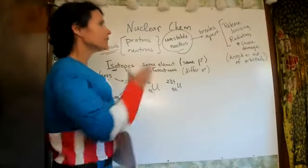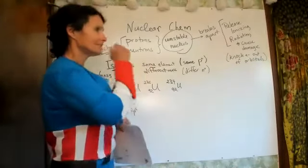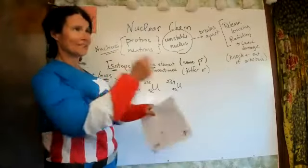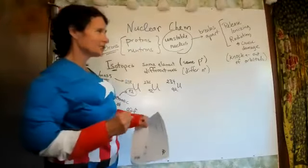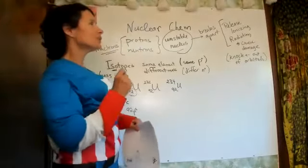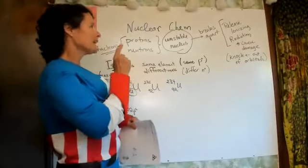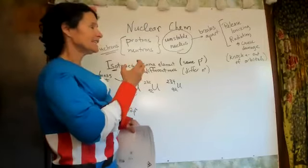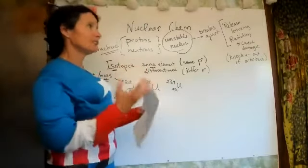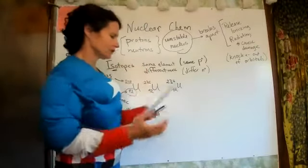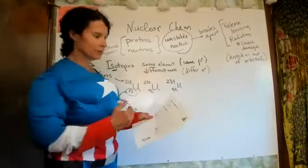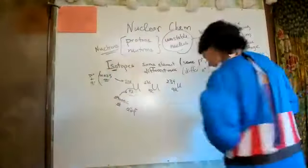Ionizing radiation is going to knock electrons out. Free radicals are something that are missing an electron, so they steal electrons. The ionizing radiation has a lot of potential. Alpha, beta, and gamma were the three classic types, and we're going to go through them.